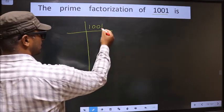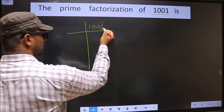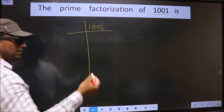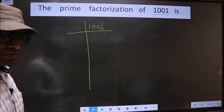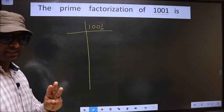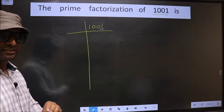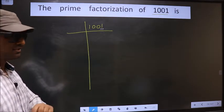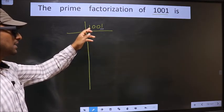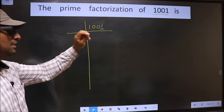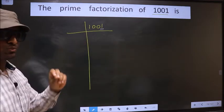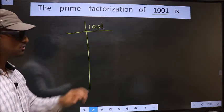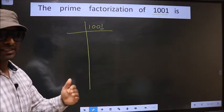For this number the last digit is 1, which is not even, so this number is not divisible by 2. Next prime number 3 — to check divisibility by 3, we should add the digits: 1 plus 0 plus 0 plus 1, we get 2. Is 2 divisible by 3? No, so this number is also not divisible by 3.